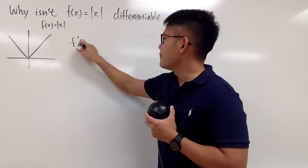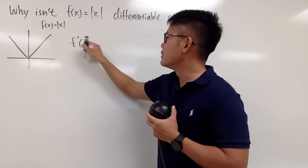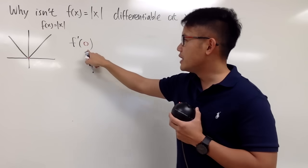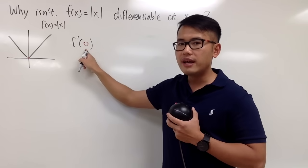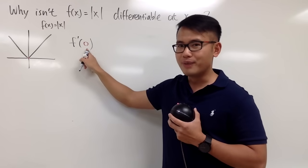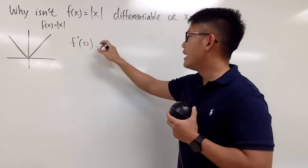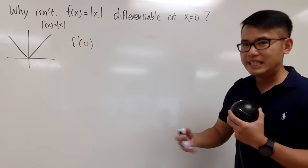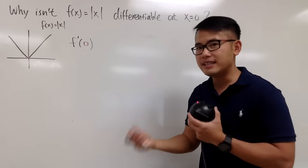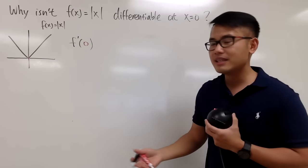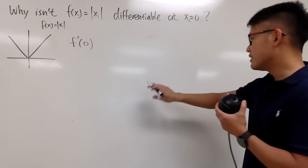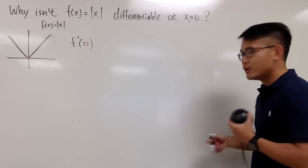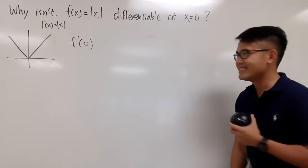F prime of 0 is the derivative of this function when x is equal to 0. I'm just trying to use the definition to see if we can come up with a nice answer or not. If we can get a nice value, that will be the answer. If not, we will see why not.